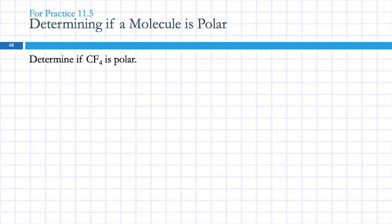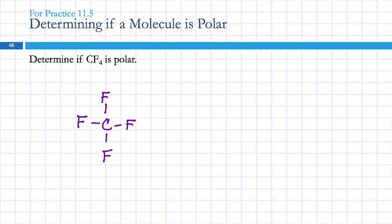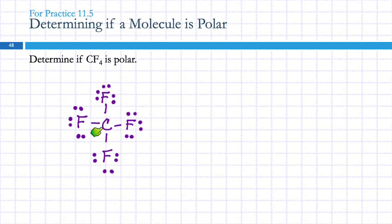Let's determine if CF₄ is polar. Start with the Lewis structure: carbon in the middle with four fluorines around it and lone pairs on the fluorines. Are there lone pairs on the central carbon? No. Are the atoms bonded to the central atom the same? Yes, all fluorine. Nonpolar.